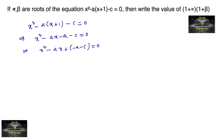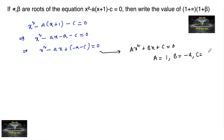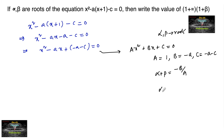Comparing this equation with the standard form ax² + bx + c = 0, we have a = 1, b = -a, and c = (-a - c). Since alpha and beta are the roots, the sum of roots alpha + beta equals -b/a, and the product of roots alpha·beta equals c/a.